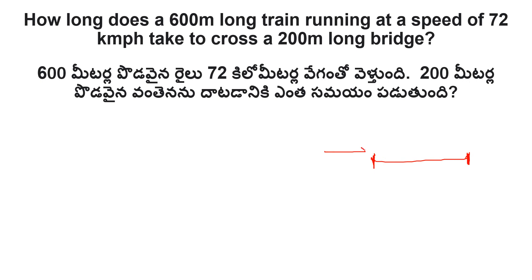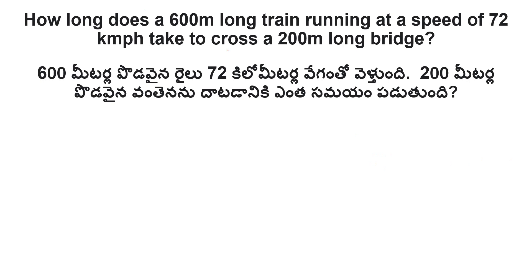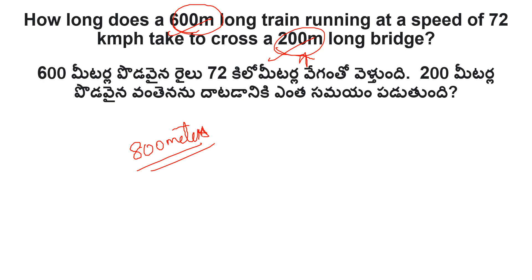The train starts from one edge of the bridge. To completely cross the bridge, the train must travel the length of the bridge plus its own length — that is 200 plus 600 equals 800 meters total distance.